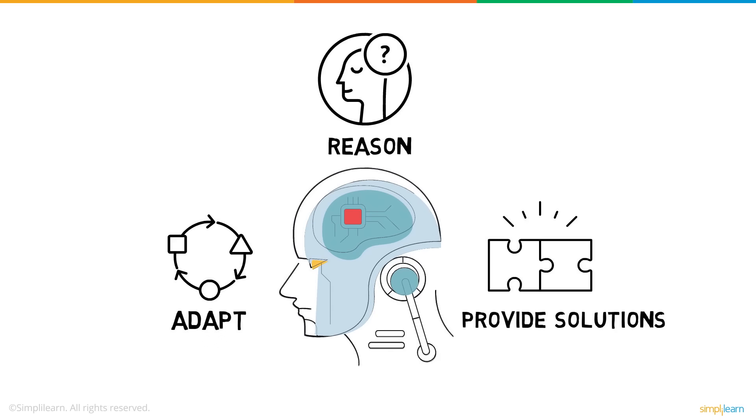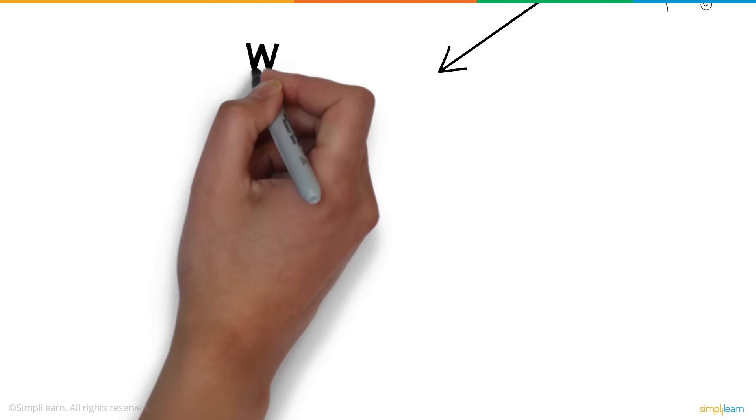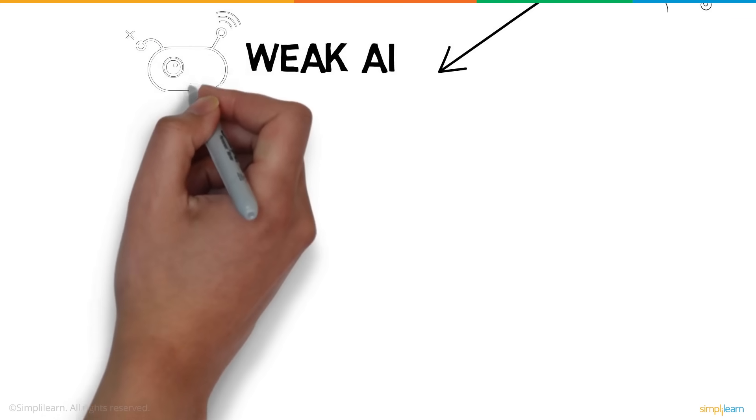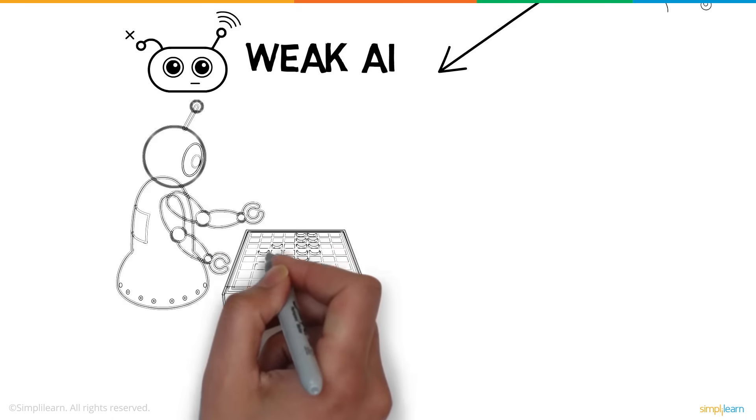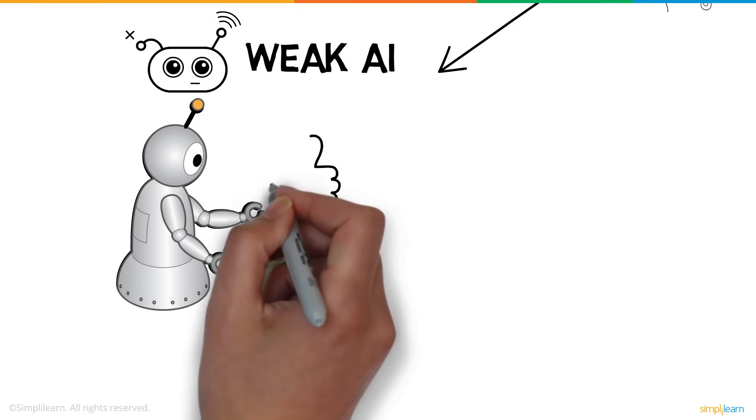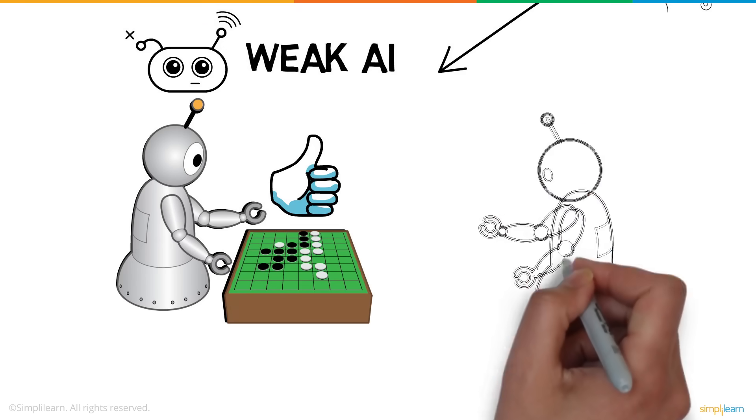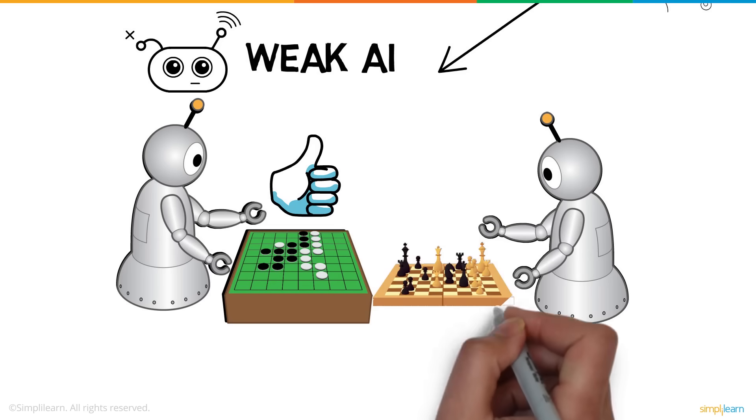Well, now that we know what AI is, let's have a look at the two broad categories an AI is classified into. Weak AI, also called narrow AI, focuses solely on one task. For example, AlphaGo is a maestro of the game Go, but you can't expect it to be even remotely good at chess. This makes AlphaGo a weak AI.